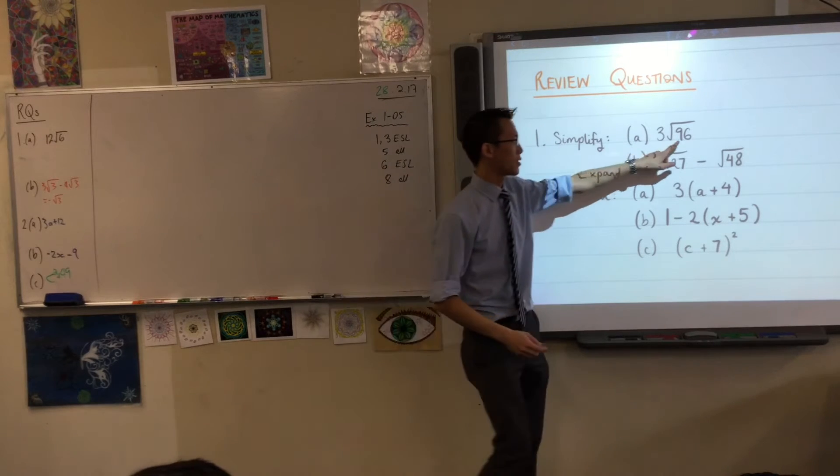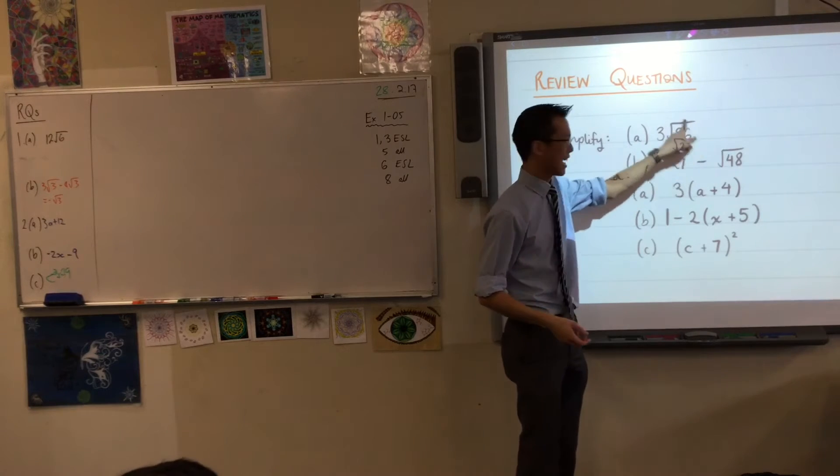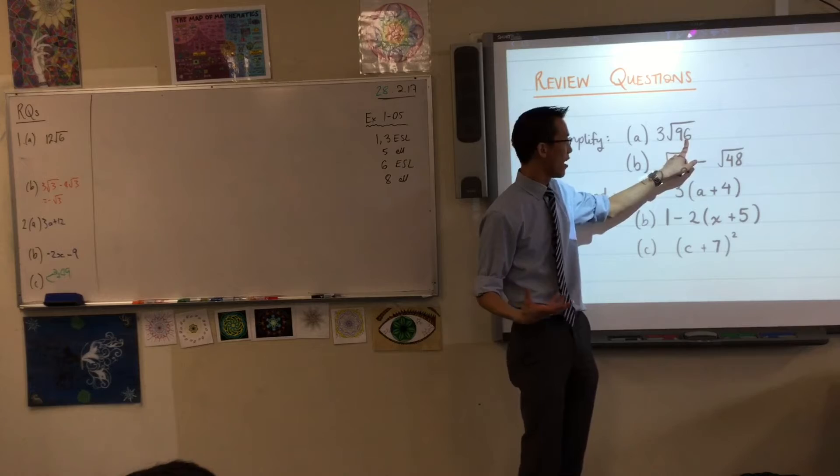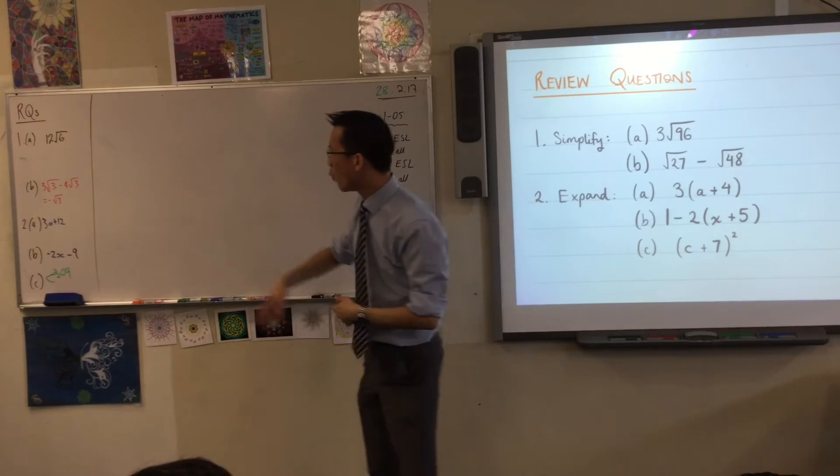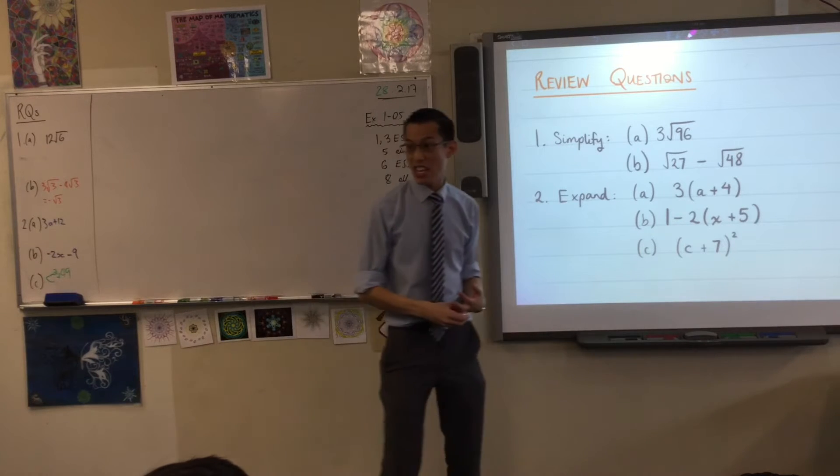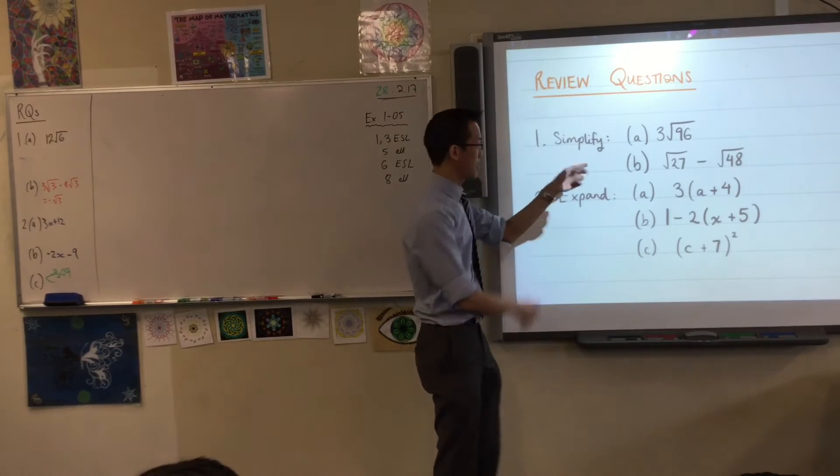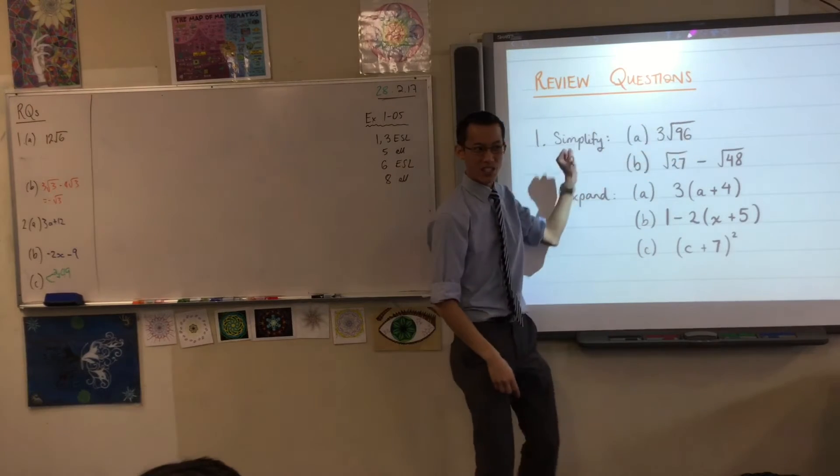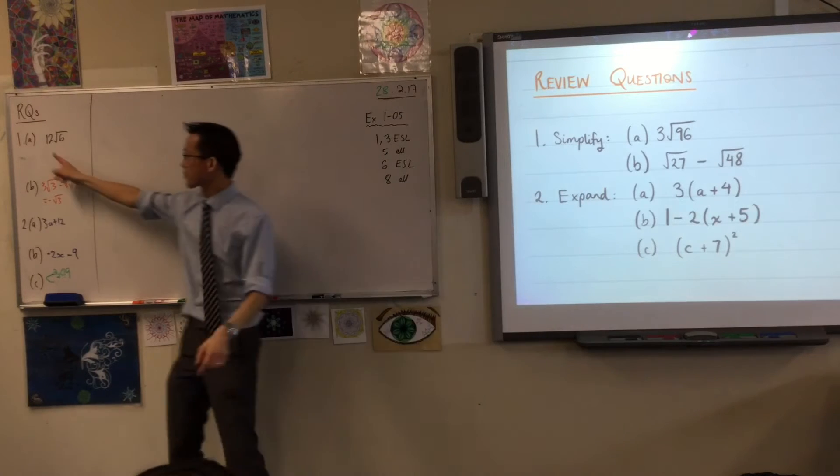But I think most people looked at this and instinctively said, okay, if I can take something out of this 96, if I can take some square root out of there, then that will be simpler. And what is the square root that's been taken out? 16. Because 96 is 6 times 16, so you take out the square root of 16, the square root of 16 is 4. 3 times 4 is 12, okay?